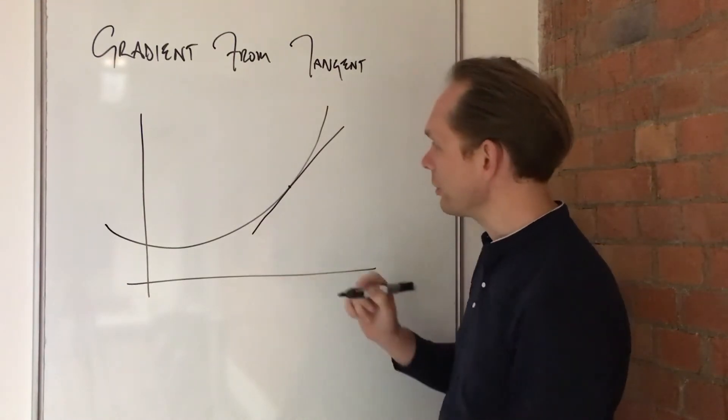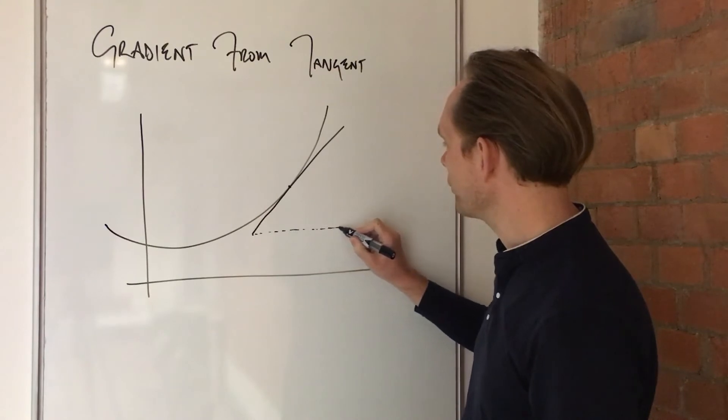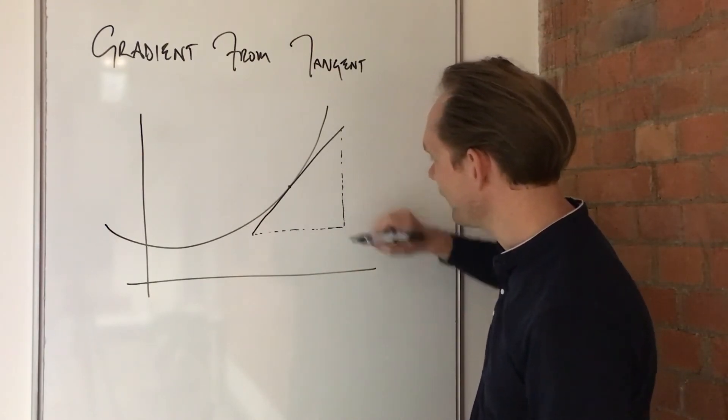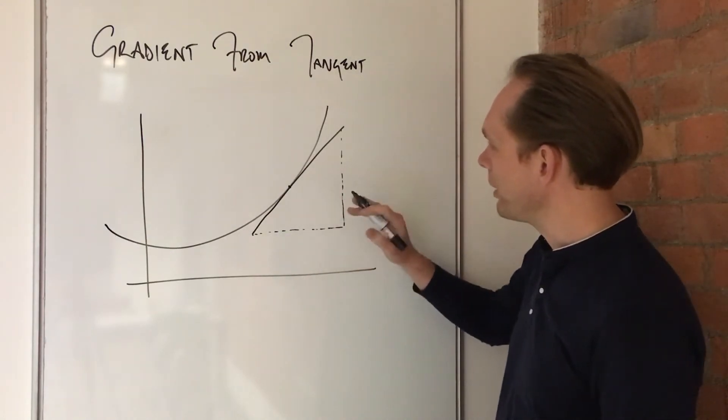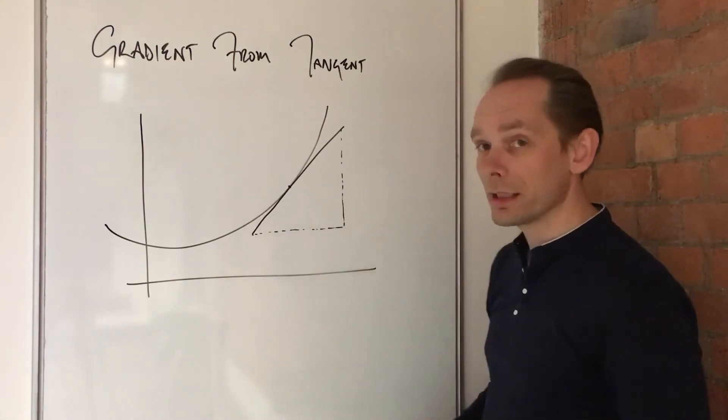Now, if you construct that tangent, what you can then do is construct a little triangle from dropping a vertical line and a horizontal line. Obviously, the bigger you make this, the more accurate your measurement will be. But that's by the by. You take your tangent, you draw a vertical and a horizontal line to get a triangle.